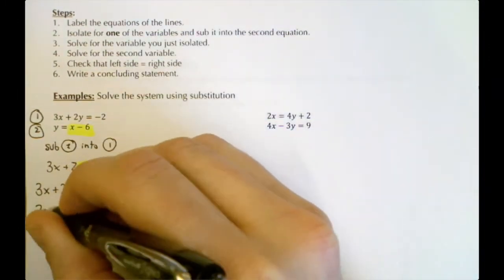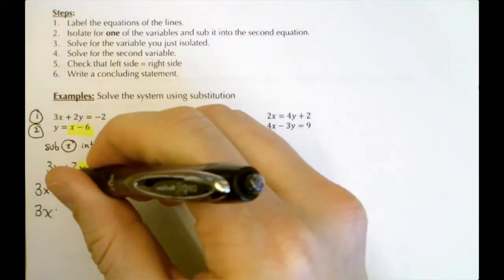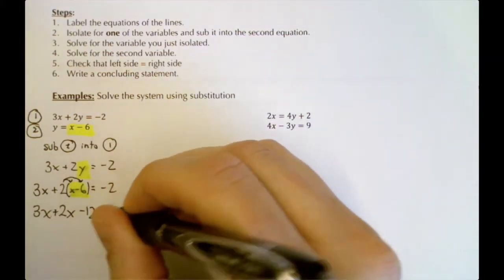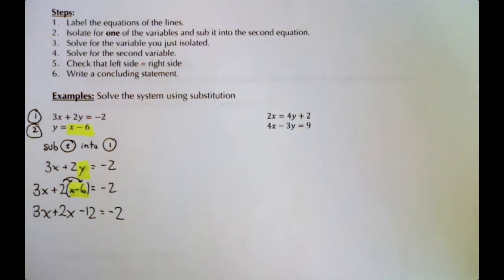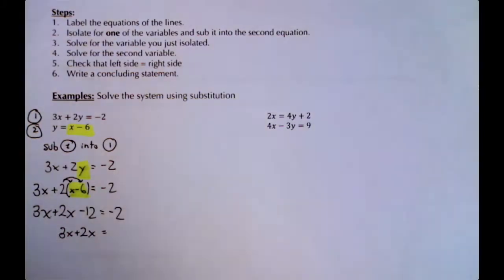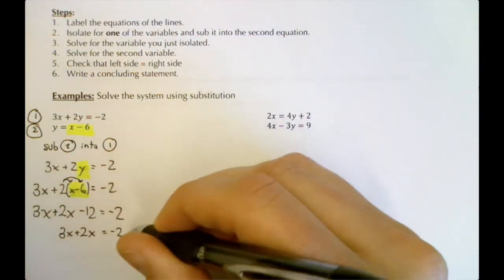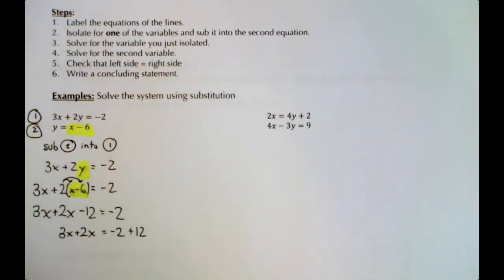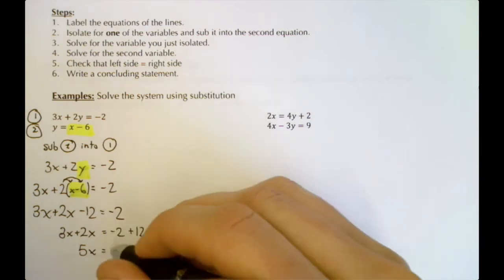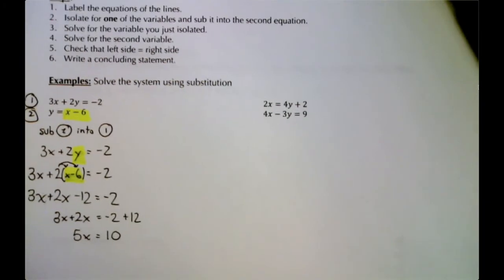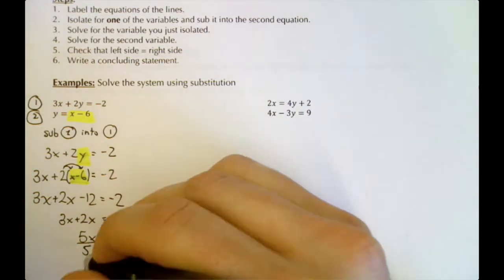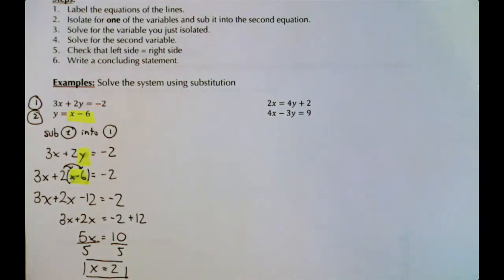We have 3x plus 2 in front of a bracket — we distribute the 2: 2 times x is 2x, and 2 times -6 is -12. Now collect like terms: keep x's on the left, move numbers to the other side. 3x + 2x stays, and -2 + 12 gives us 5x = 10. Dividing both sides by 5 gives x = 2.